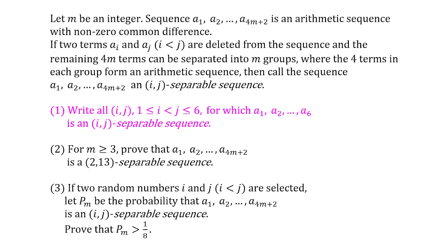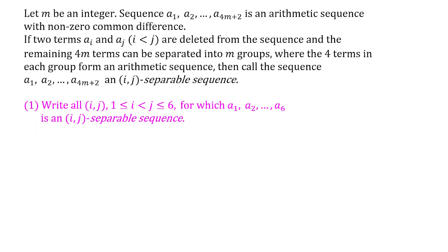Part one is really testing that we understand the definitions. If we have a six-term arithmetic sequence, we want to remove two terms and be left over with a four-term arithmetic sequence. So clearly those four terms must be consecutive. For example, if we remove the first two terms, we'll be left with the last four, which is clearly an arithmetic sequence.